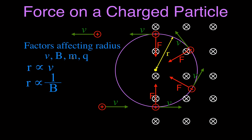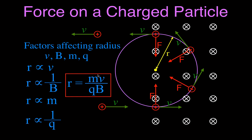Now, what about mass? A more massive particle has more inertia — it's harder to change its path — so the greater the mass, the greater the radius. They are directly proportional. And for charge: the charge is what interacts with the magnetic field, so the higher the charge, the greater the force, and therefore the smaller the radius. The radius and the charge are inversely proportional. Combining all four factors, the radius is directly proportional to mass and velocity and inversely proportional to charge and magnetic field strength.